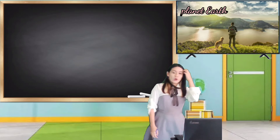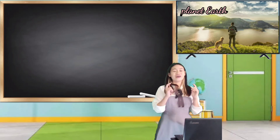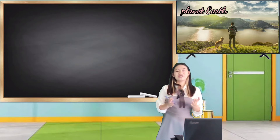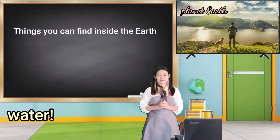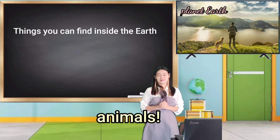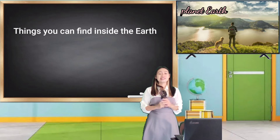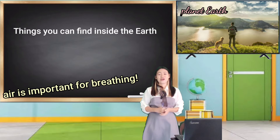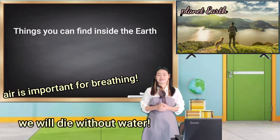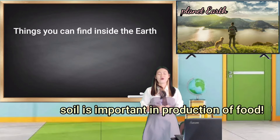Okay, what is the main topic in the video? Planet Earth. Very good. From what you have seen, what are the things you can find inside the Earth? Water. Plants. Animals. Human. Land. Yes, correct. Do you think these are necessary for Earth to be habitable? Yes. Why? Air is important for breathing. Correct. The level of water. Yes, that's correct. Soil is important in production of food.